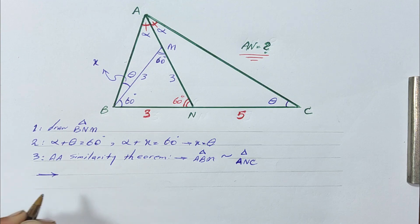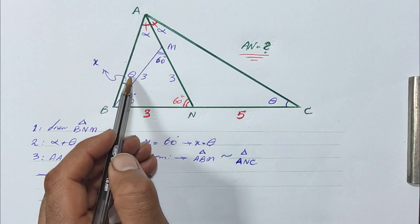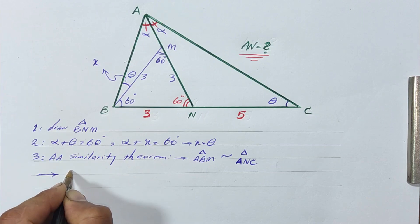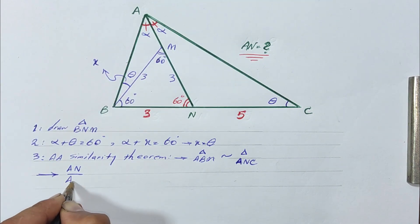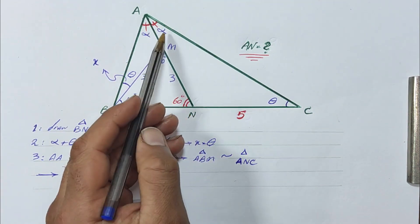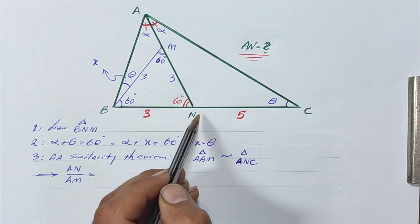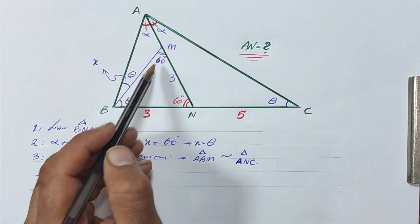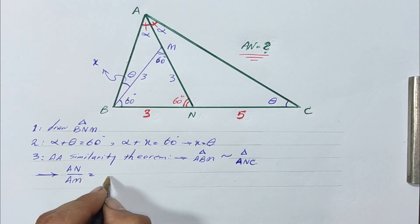Now we can solve the problem. The side opposite theta in triangle ANC is AN, and the side opposite theta in triangle ABM is AM. So we have AN over AM. The side opposite alpha in triangle ANC is NC, equal to 5. The side opposite alpha in triangle ABM is BM, equal to 3. So we have AN over AM equals 5 over 3.